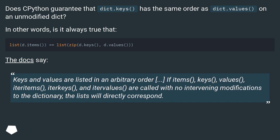The docs say: keys and values are listed in an arbitrary order. If items, keys, values, iteritems, iterkeys, and itervalues are called with no intervening modifications to the dictionary, the lists will directly correspond.